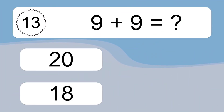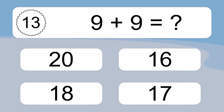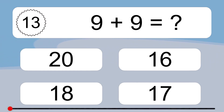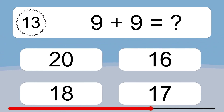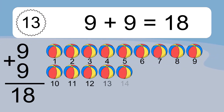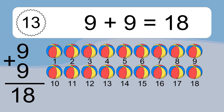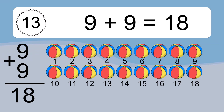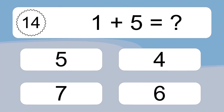9 plus 9 equals what? 9 plus 9 equals 18. 1, 2, 3, 4, 5, 6, 7, 8, 9, 10, 11, 12, 13, 14, 15, 16, 17, 18.